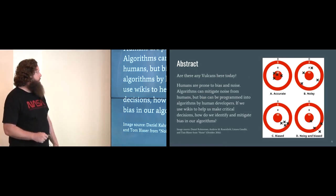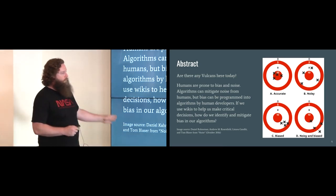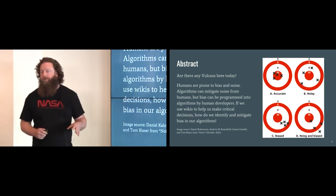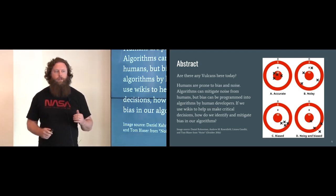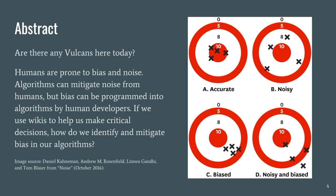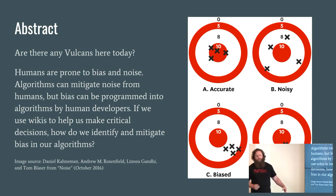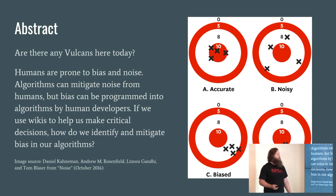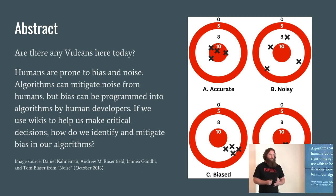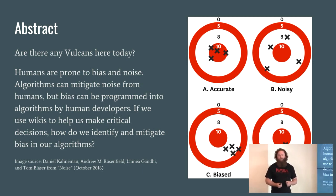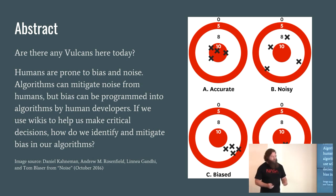These slides are linked from the schedule for the conference today, so you can reference them later. Basically, as I was saying earlier, we are prone to bias, and we try to make our decisions easier because of that — we try to find mental tricks to take a shortcut. I'm going to try to show you some examples of what I mean.